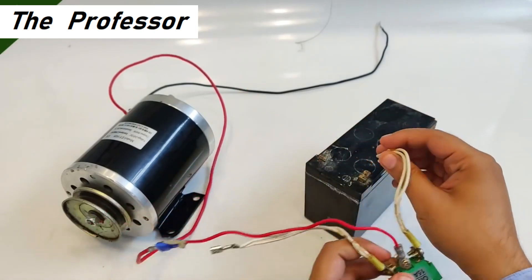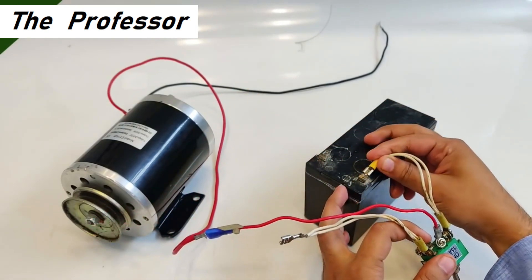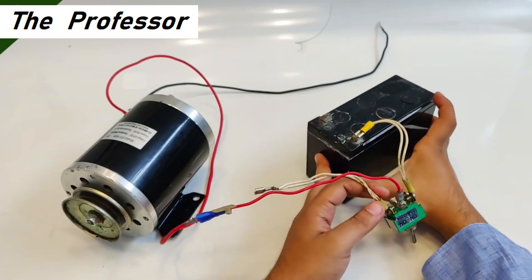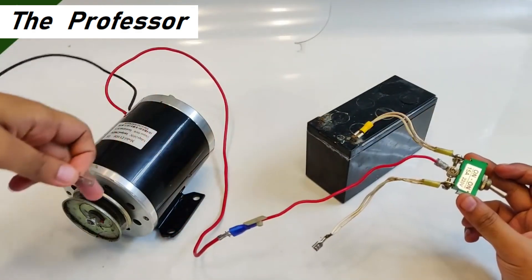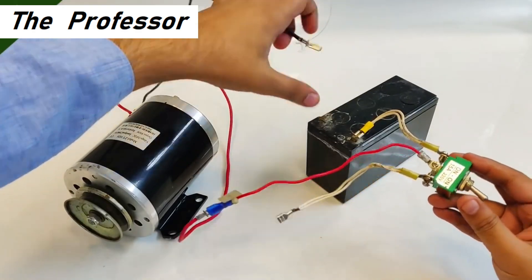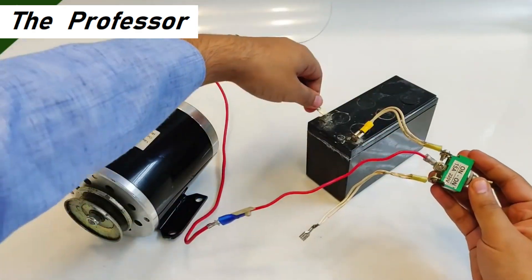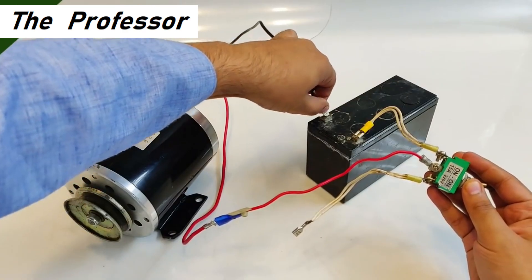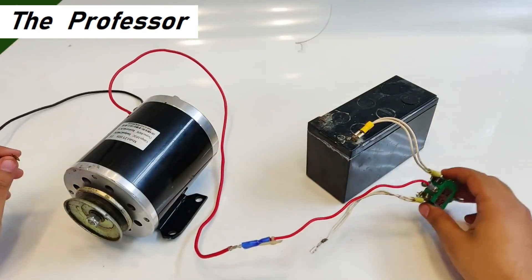Connect it to the battery, any terminal of the battery. Here I've connected it to the negative terminal of the battery. Now when I will connect it, it will start running. You see. Now let's turn it off. You see, it is not running anymore. That's the simple switch function.